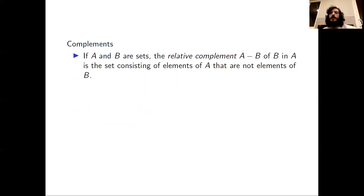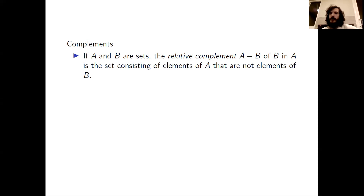Here's another operation that we can do called complementation. Again, we have 2 sets A and B, and first we'll define the relative complement of B in A. We'll write that just as A minus B. And that will be defined as the set which consists of elements of A that are not elements of B.